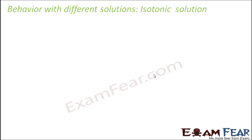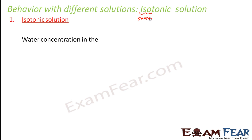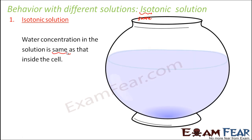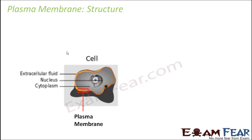In an isotonic solution — 'iso' means same — the concentration of water in the solution is the same as inside the cell. So there will be no movement at all; water will neither move outside nor enter inside, and the cell will remain as it is with no swelling or shrinkage. Based on this, the plasma membrane performs two important functions: it provides shape to the cell, and it allows only certain particles to pass through.